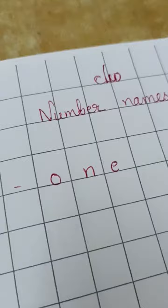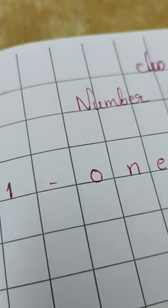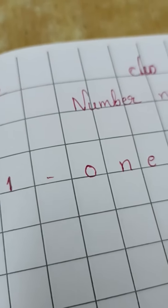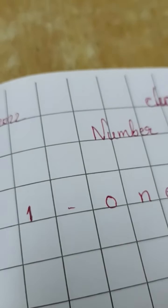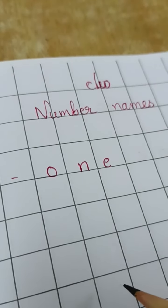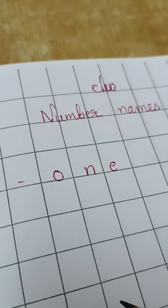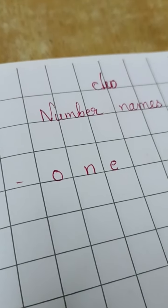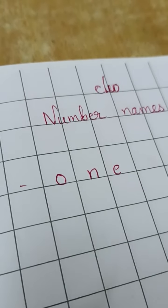Children, take your math notebook. Up to 100 we have completed. Missing numbers also completed. So today we are going to write number names. You know oral number names up to 10, right? Up to 10. Some children are saying up to 20 also.